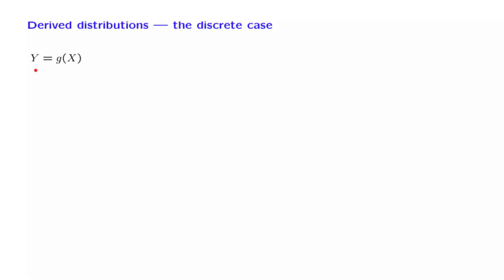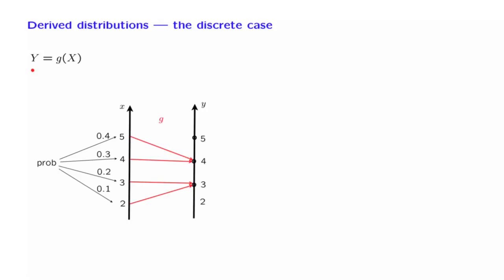Here is a simple example. The random variable x takes the values 2, 3, 4, and 5, with the probabilities given in the figure, and y is the function indicated here.